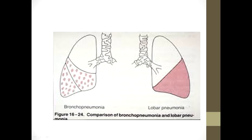The two most common types of pneumonia in children are bronchopneumonia and lobar pneumonia. Lobar pneumonia, as the name implies, involves the whole lobe of the lung. Bronchopneumonia typically shows a scattered appearance of affected regions on radiographs — one patch of consolidation versus scattered areas of consolidation.